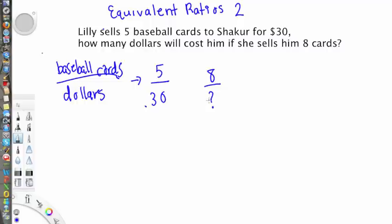If she were selling him 10, it'd be real simple. We would say hey, I'm just doubling the number of cards from 5 to 10, so the cost would also double and be $60. But we don't have that, it's not a simple multiple like that.